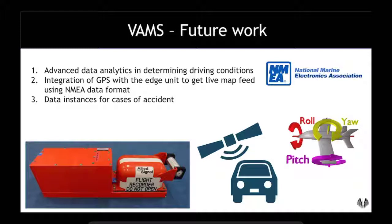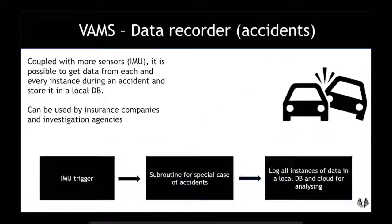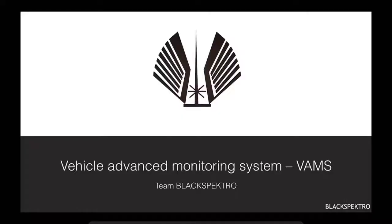For future work, we are interested in accident data recording, where we want to capture essential data that might get triggered during an accident using GPS and IMU. For this experimental accidental use case, we aim to capture IMU and GPS data which can be used by insurance companies as well as investigation agencies for further investigation. That covers the data flow and architecture for VAMS.